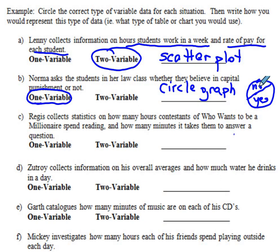Regis collects statistics on how many hours contestants of Who Wants to be a Millionaire spend reading and how many minutes it takes them to answer a question. Now there are two things in this case. How many hours contestants spend reading and how many minutes it takes them to answer a question. So there are two things that are changing in this, and therefore it's not one variable, but it's actually two variables because there are two things that are changing in this. So definitely we can use a scatter plot for it.